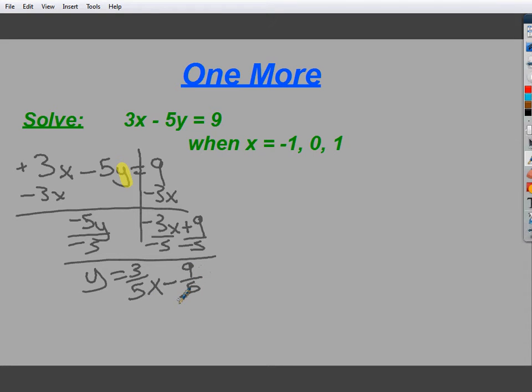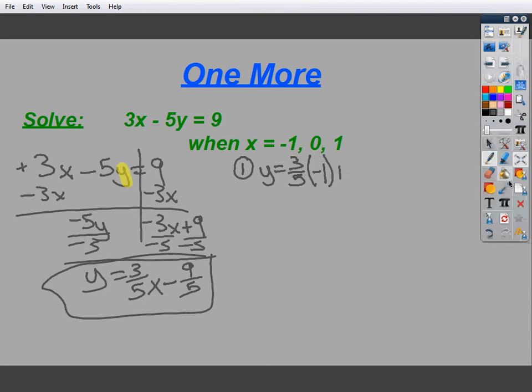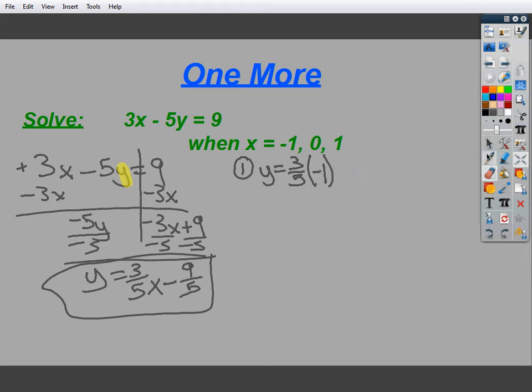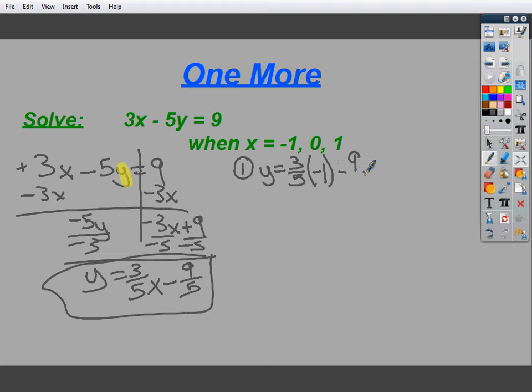I just need to plug in my values. So, number 1 would be y is equal to 3 fifths times negative 1 minus 9 fifths. 3 fifths times negative 1, of course, is negative 3 fifths. And if I take 9 fifths away from that, my final value for this one is y is equal to negative 12 over 5. So, that's my first one.